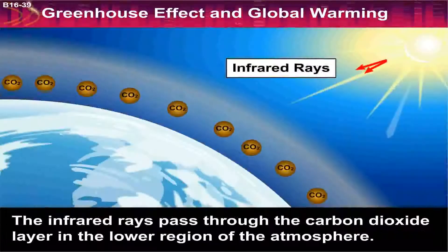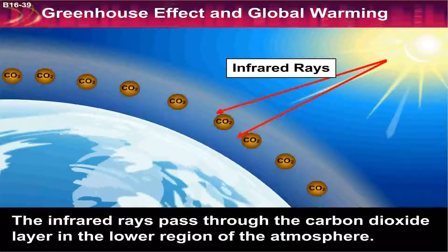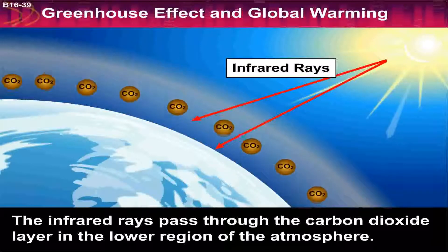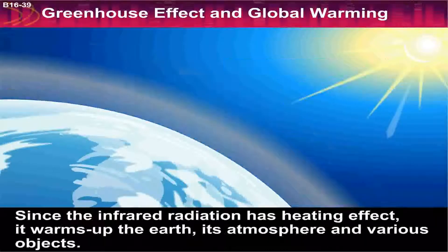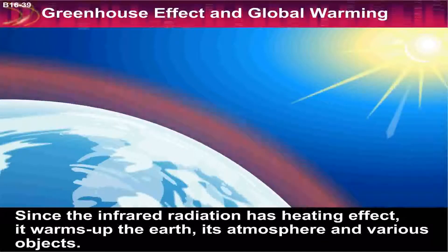The infrared rays pass through the carbon dioxide layer in the lower region of the atmosphere. Since the infrared radiation has heating effect, it warms up the earth, its atmosphere, and various objects.